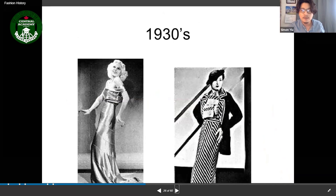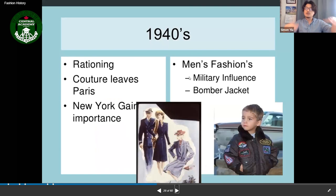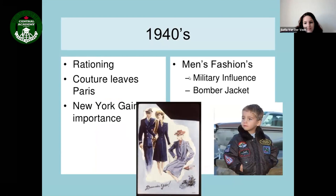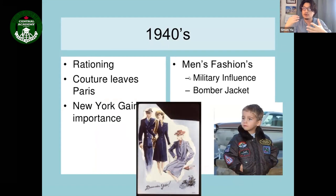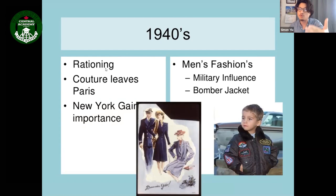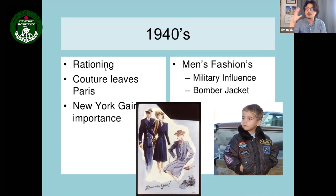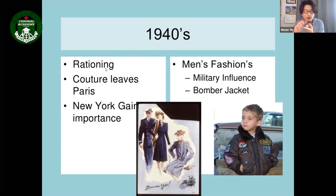In the 1940s, the major event was World War Two. Rationing meant the government allocated limited food and fabric during wartime — people only got set amounts. Haute couture, which began in Paris, started spreading to New York, London, and later Japan and other countries as Paris's central role shifted.